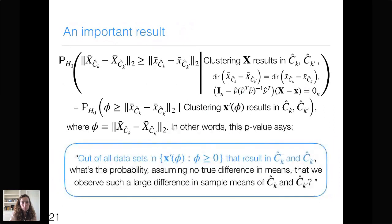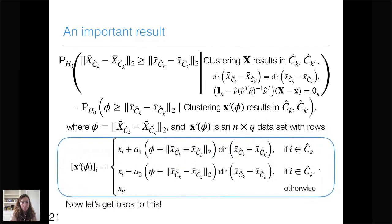Here x'(phi) is an n-by-q data set that perturbs our original data. The i-th row of x'(phi) equals the i-th row of x if observation i is not in cluster k or cluster k-prime. But if observation i is in cluster k or k-prime, x'(phi) perturbs that observation in a very specific way as a function of phi. The p-value is then: out of all data sets of the form x'(phi) that result in C-hat-k and C-hat-k-prime, what's the probability of seeing such a large difference in the sample means?